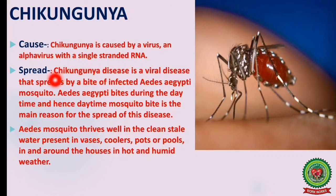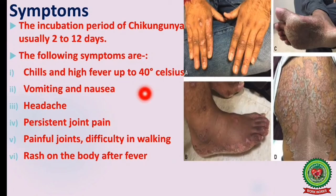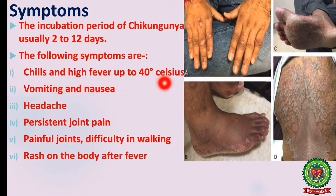Chikungunya spreads through the bite of an infected Aedes aegypti mosquito, which bites during the day — hence daytime mosquito bites are the main route of spread. The Aedes mosquito thrives in clean stagnant water present in buckets, coolers, pots, or pools in and around houses in hot and humid weather. The incubation period is usually 2 to 12 days. Symptoms include chills and high fever up to 40 degrees Celsius, vomiting and nausea, headache, persistent joint pain, painful joints, difficulty in walking, and a rash on the body after fever.